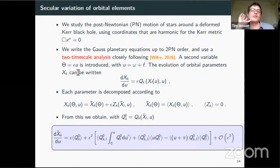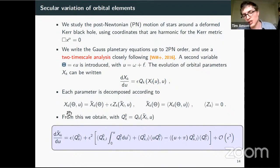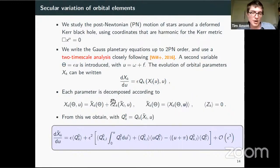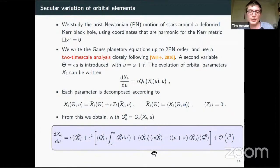Each orbital parameter — omega, Omega, iota, eccentricity — has an evolution equation. This system is a rewriting of Newton's equations with a perturbed acceleration. Each parameter is decomposed into a mean value averaged over u, plus oscillatory corrections. The variable u varies on timescales much shorter than theta; capital theta can almost be taken as constant on the timescale of u variation. At leading order it is constant, but at higher PN corrections this needs care — this is exactly the two-timescale approach we use. From this, you obtain the secular variation of each parameter, where the right-hand side no longer depends on u.